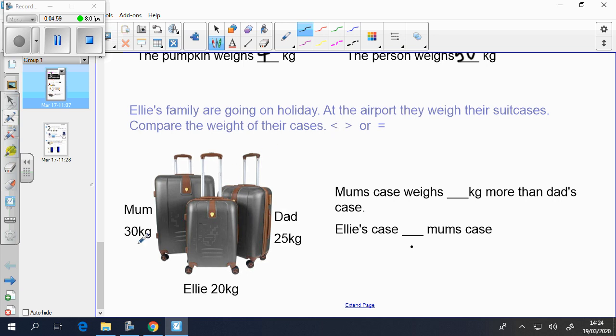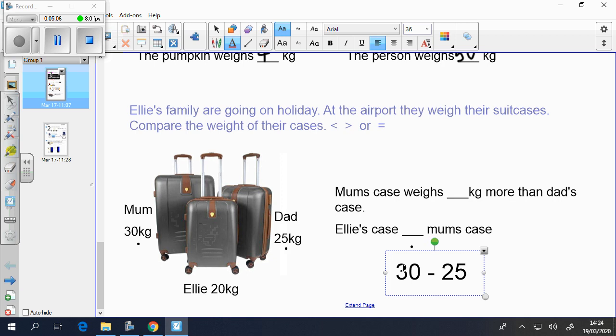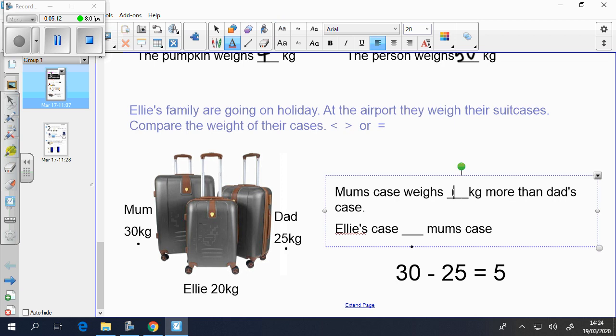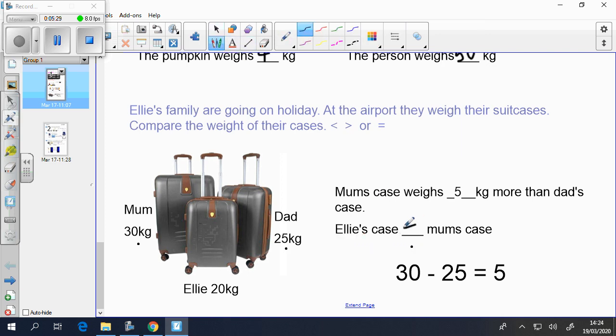So, Mum's case is 30 kg. Dad's case is 25 kg. So you're going to take the biggest number, take the smallest number away. So 30 take away 25 gives you 5. So Mum's case weighs 5 kg more than Dad's. Ellie's case is 20 kg and Mum's case is 30 kg. So you can see that Mum's case is much bigger. So Ellie's case is less than Mum's case.